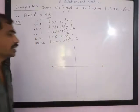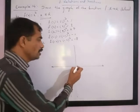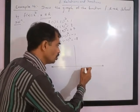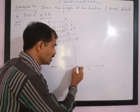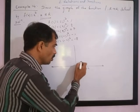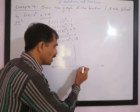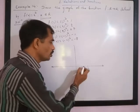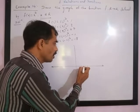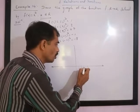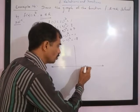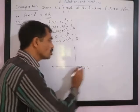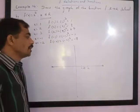This is what we have already studied. For example, if this is 1, root 2 is somewhere here — if you take 1 on each side and form a right angle, the hypotenuse will be root 2, which is approximately 1.4142. So root 2 can also be plotted on the number line.